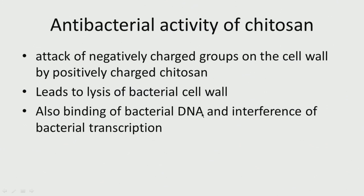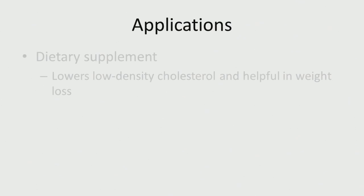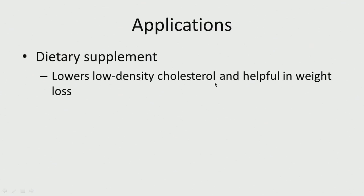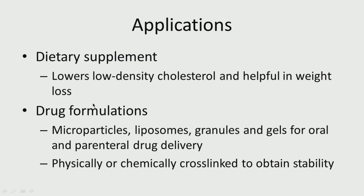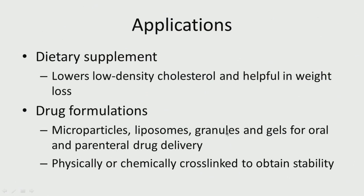Chitosan also binds to bacterial DNA and interferes with bacterial transcription. It is used as a dietary supplement that lowers low-density cholesterol, which is involved in cardiovascular issues, and helps in weight loss. It is used in drug formulation — the chitosan can be modified extensively because it has three different functional groups: the primary OH, the secondary OH, and the NH2. Many drug formulations are made including microparticles, liposomes, granules, and gels for oral and parenteral drug delivery. It can be physically or chemically cross-linked to improve the stability of chitosan.